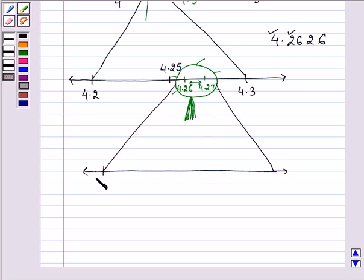This point is 4.26 whereas this point is 4.27. We are looking for 4.262. So this is 4.261. So this will be 4.262 and this will be 4.263.